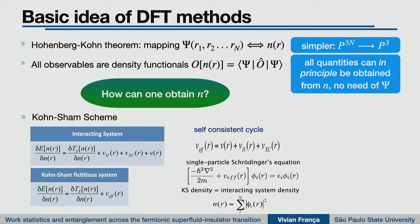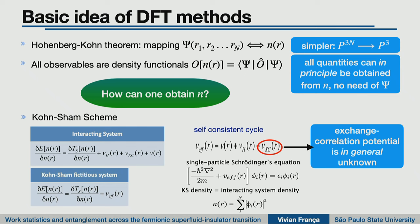I solve the simpler system, obtaining the single-body wave functions — the Kohn-Sham orbitals — and get the density for this system, which is forced to represent the same density as the interacting system. So I get the density of the interacting system by solving a much simpler fictitious problem. The problem — where DFT becomes approximate — is that we don't know the exchange-correlation potential. At this point, we put in approximate functionals for this object, and the method becomes approximate. The quality of your results depends on the quality of your functional.